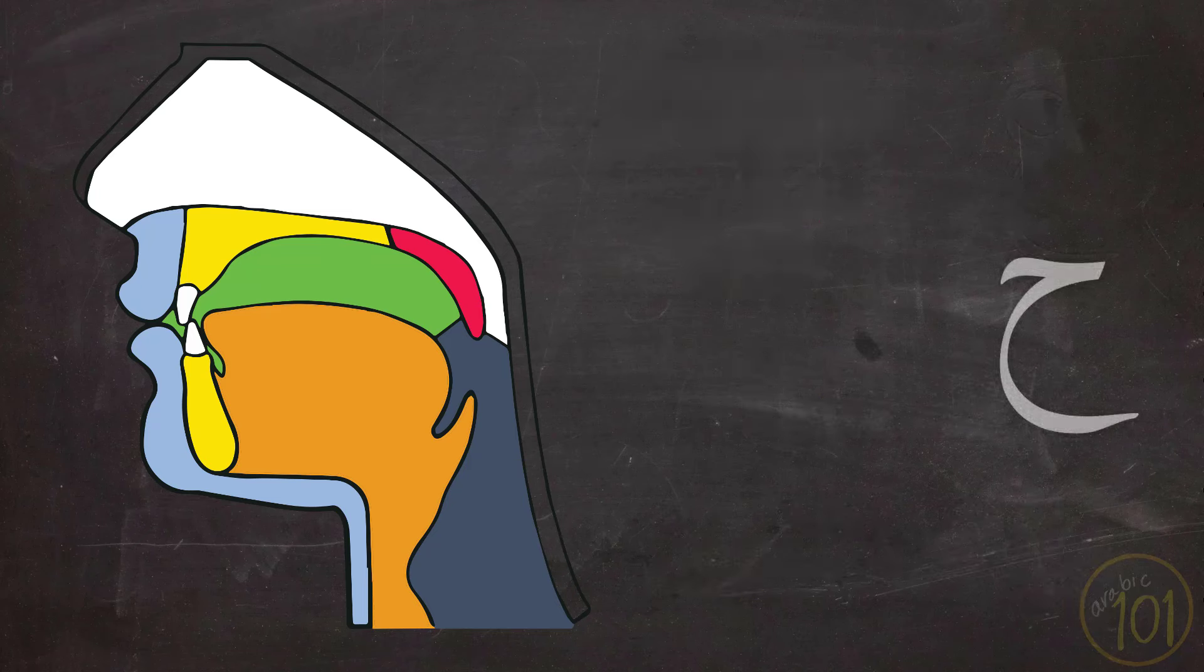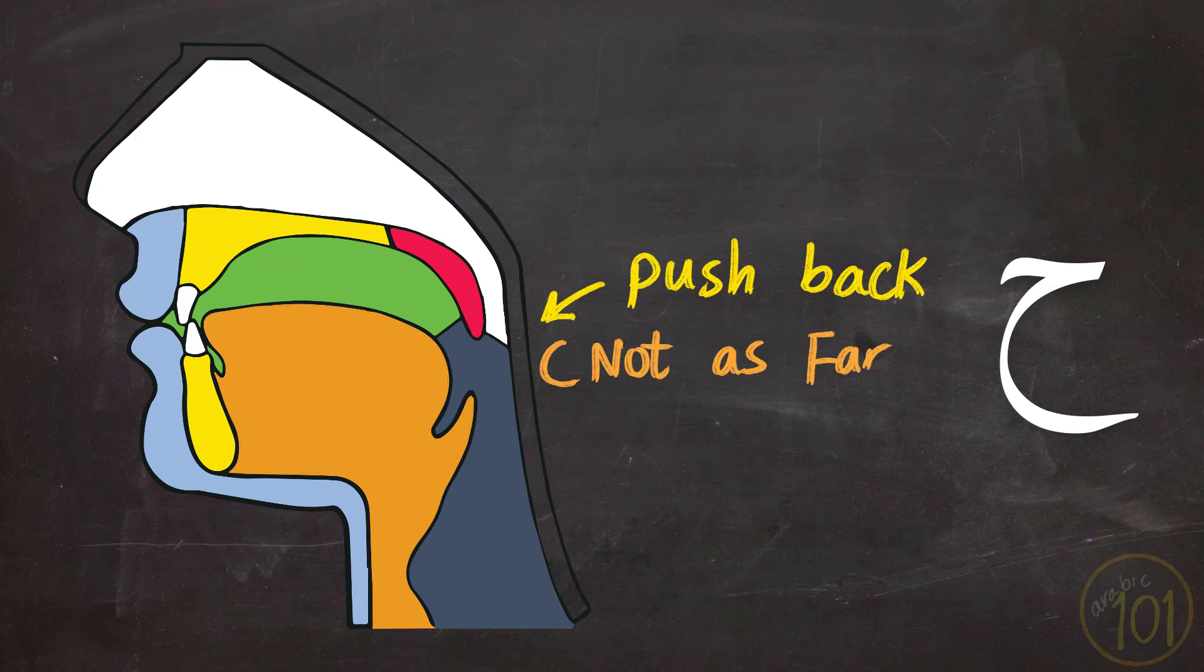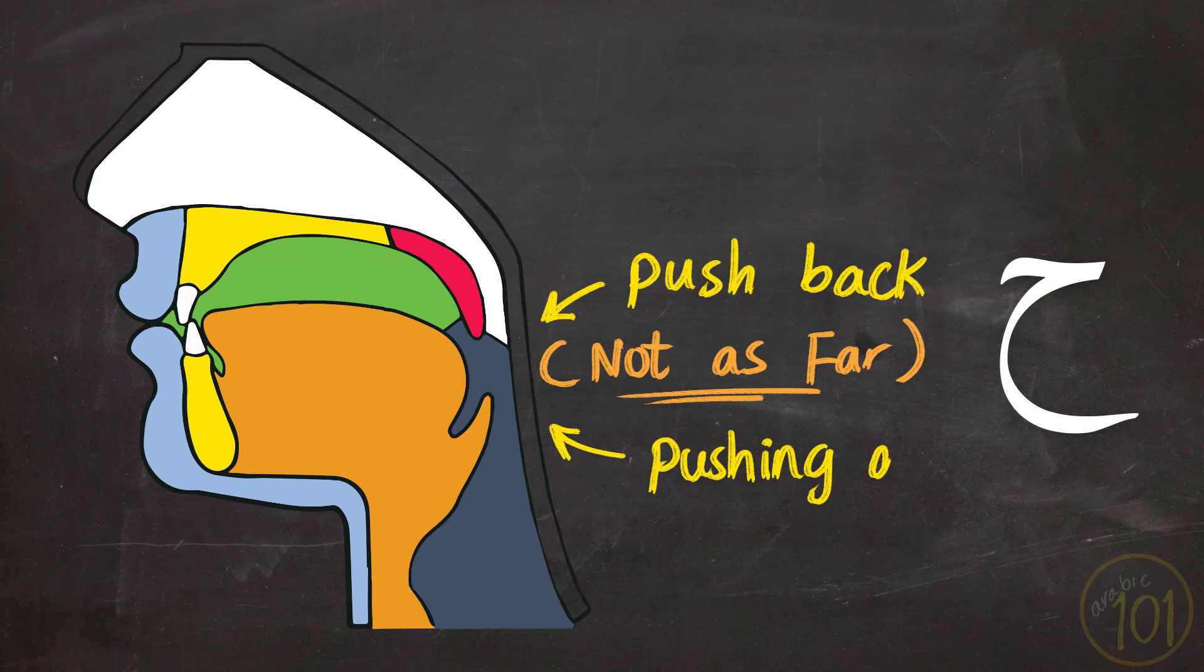Moving on to the Ha, which is the other sound that is generated from the same articulation point, using the same organ, the epiglottis. This time your epiglottis will not go far or push against the wall of your throat like we did with Ayn. So, it will not go as far as the Ayn. Another difference is that with Ha, you'll be pushing air out. The friction of that air passing through the small opening generates the Ha sound.